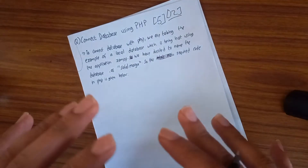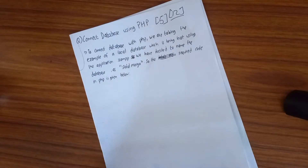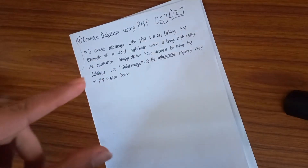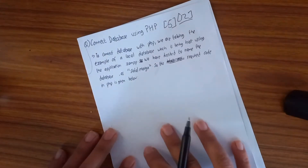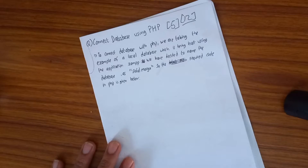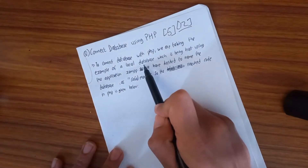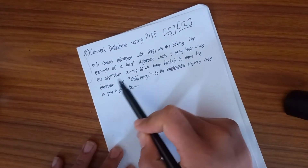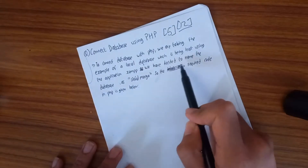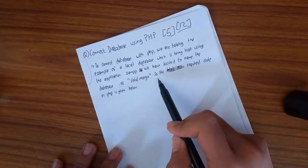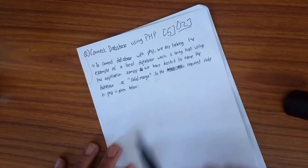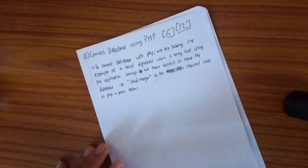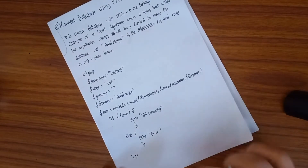We are going to get the code for grade 12 — the code to connect the database with PHP. We are taking the example of a local database which is being hosted using the application XAMPP. We have decided to name the database as 'Tafalmarga'. The required PHP code is given below.